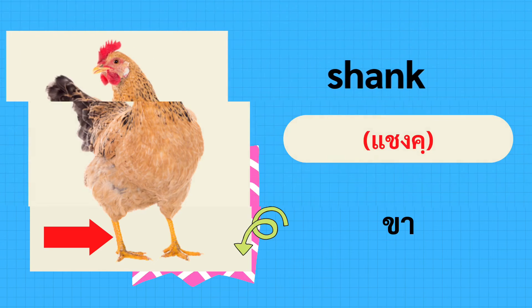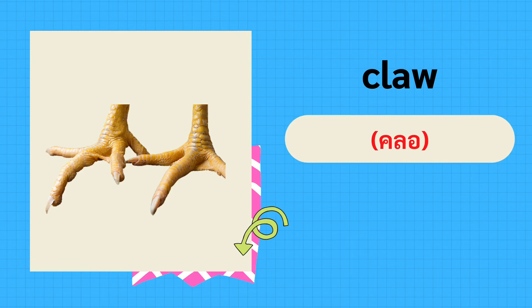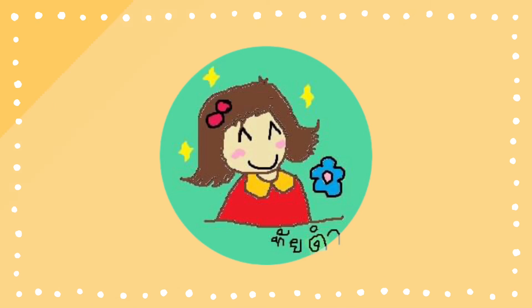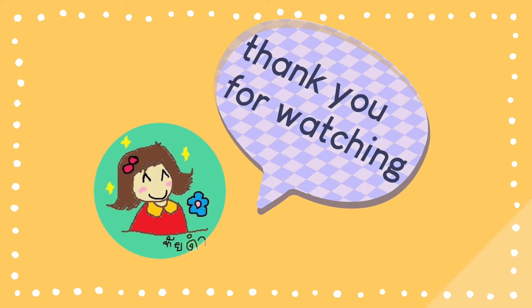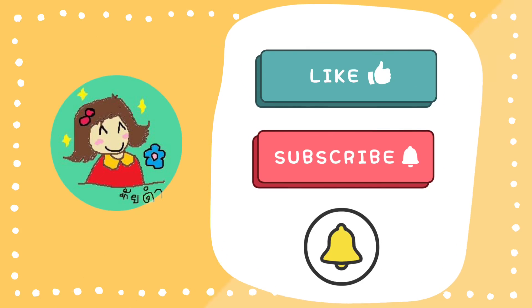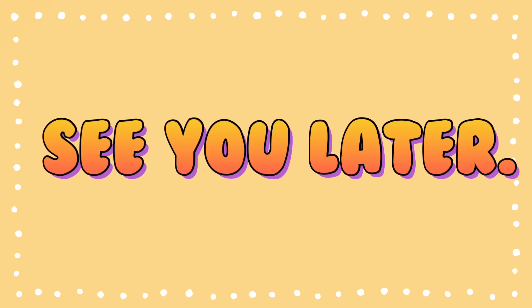Claw — โกรงเล็บ ขาไก่. Wing — ปีก. New lesson every day. See you later. Bye!